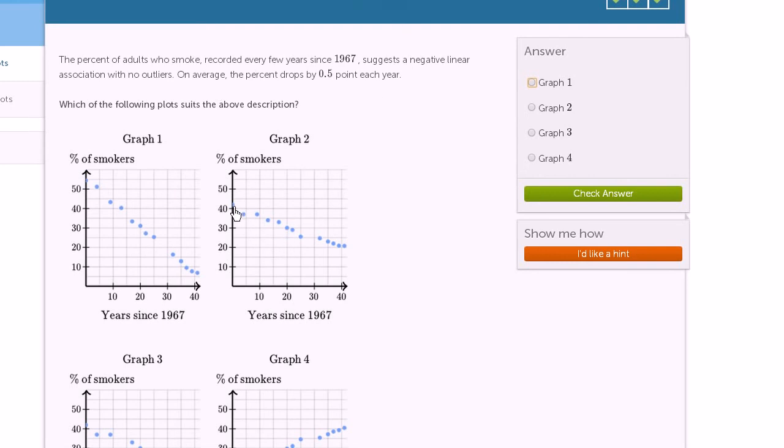Now let's look over here. Over here, we're starting, it looks like at around 42%, and then after 10 years, it looks like we're at like 37%. So it looks like we've dropped about 5% in 10 years, which is consistent with this. If you drop 5% in 10 years, that means you drop half a percent per year. So we'll go with graph two.